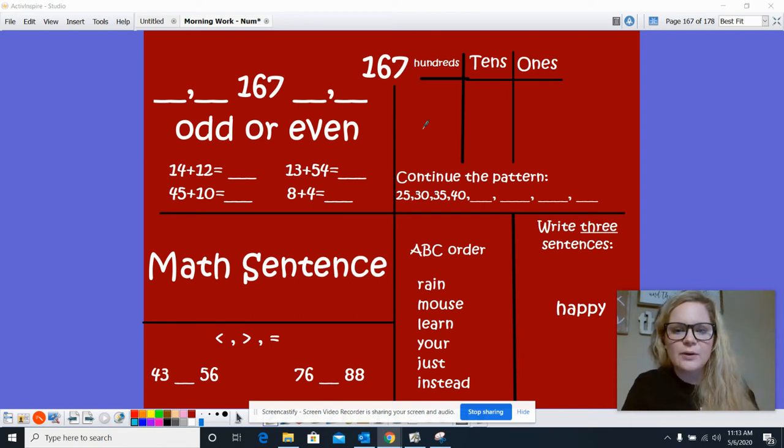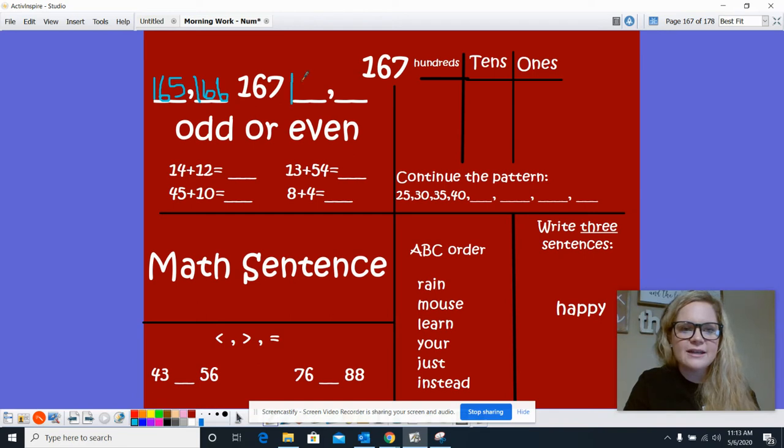So let's go over it. What two numbers go before 167? 165 and 166. What two numbers go after 167? 168 and 169.